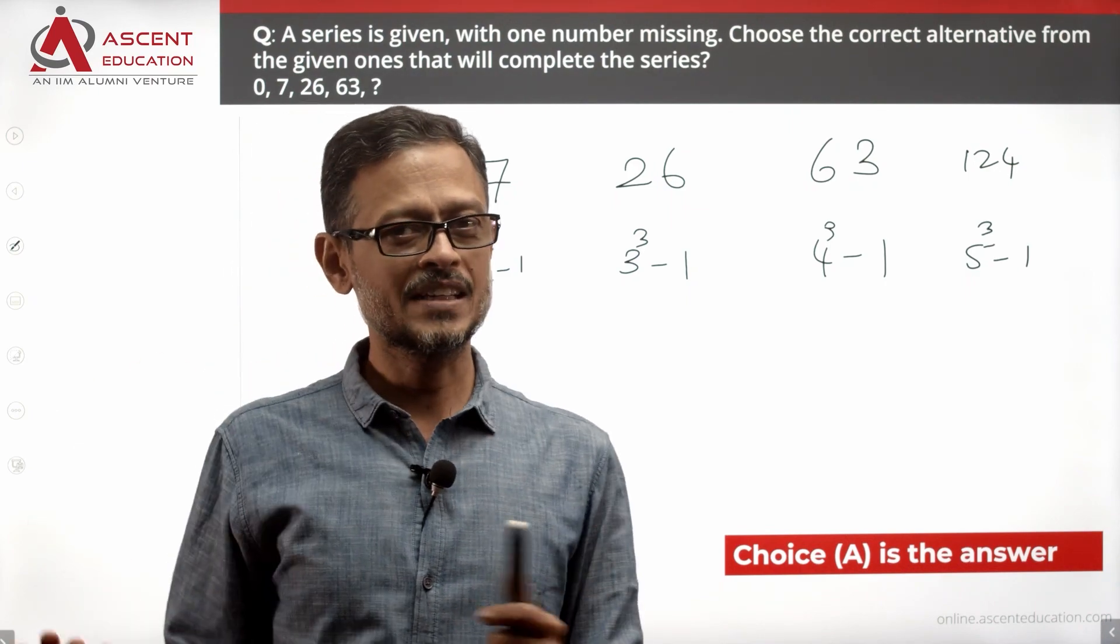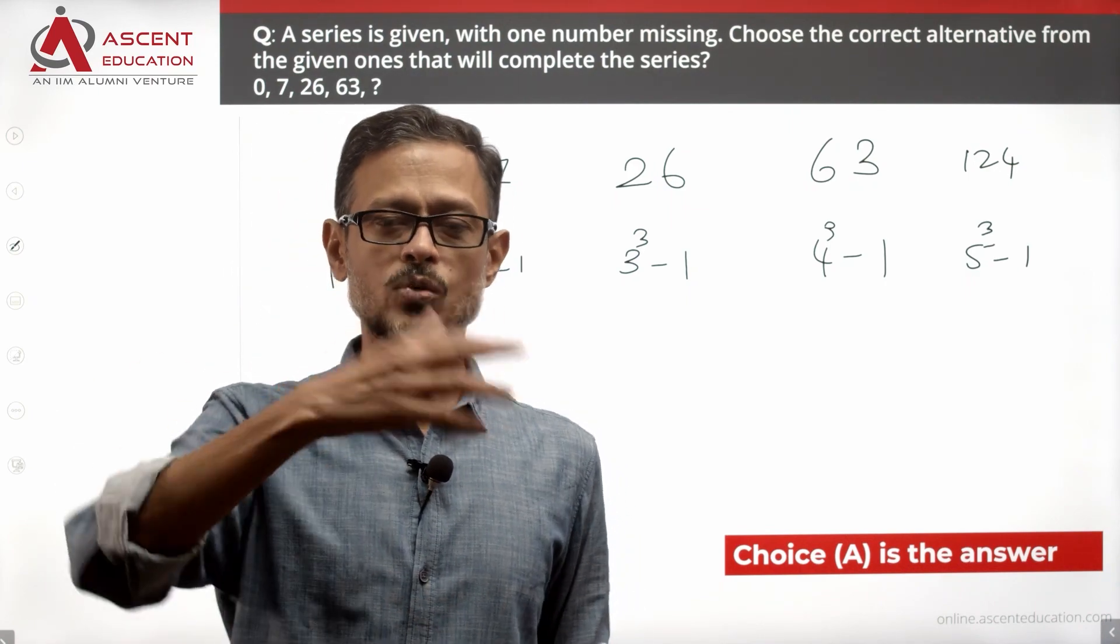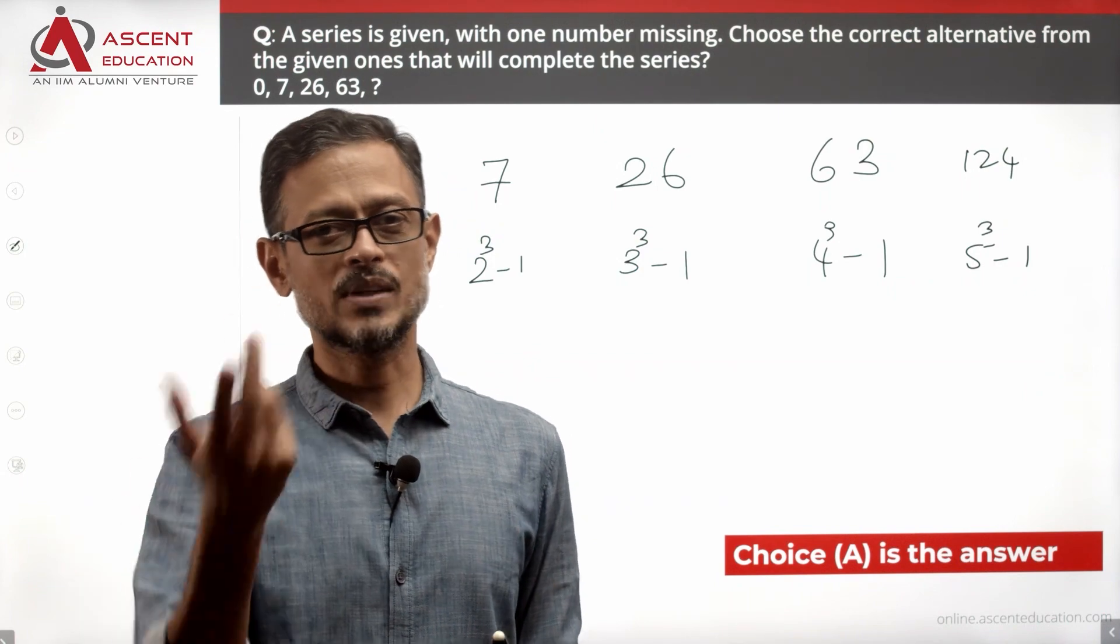These are patterns like square minus 1, square plus 1, cube minus 1, cube plus 1. These are all the different patterns that you are likely to see in the examination.